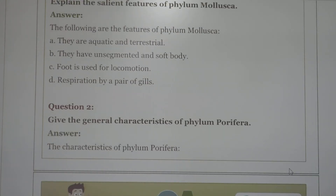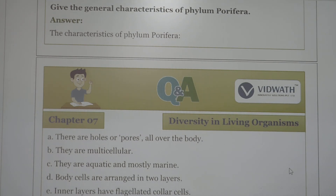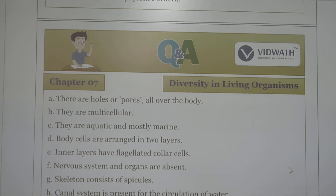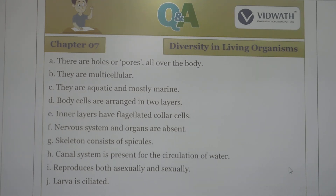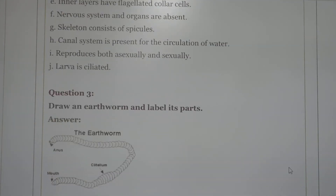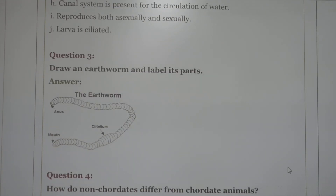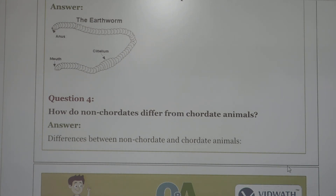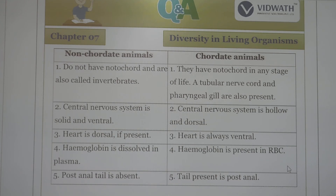The general characteristics of phylum Porifera: these are organisms with pores or holes. They are multicellular. They are aquatic and mostly marine. The body wall consists of two layers; the inner layer has flagellated cells. They have no nervous system. A canal system is present for circulation of water. Reproduction is both sexual and asexual. Next question: how do non-chordates differ from chordates? Non-chordates do not have a notochord and are invertebrates.